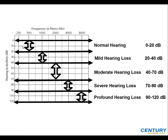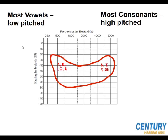But how does this relate to conversation with other people and the sounds you may be missing? When you're talking to people or listening to a speech or a sermon, most vowels are low pitched — they're like A, E, I, O, and U — and those are in the lower frequencies. Most consonants are high pitched, like S, T, F, and SH. These are higher frequencies, sometimes associated with women's voices.